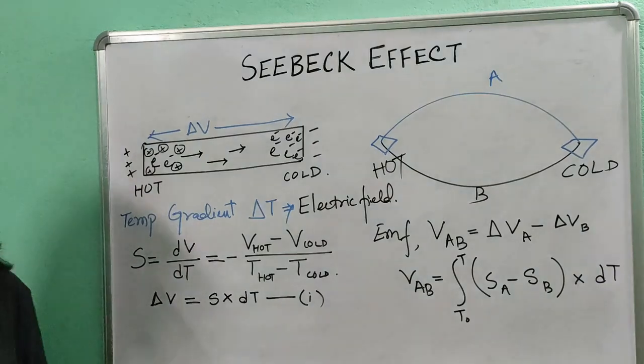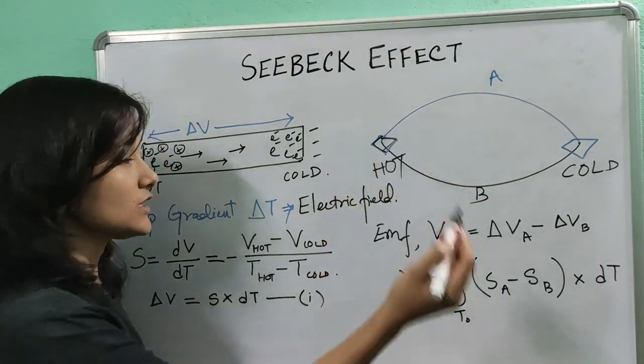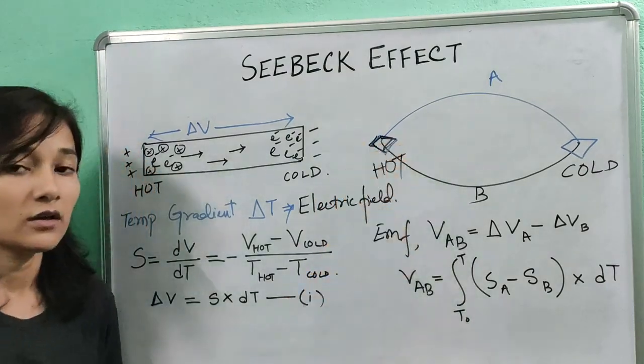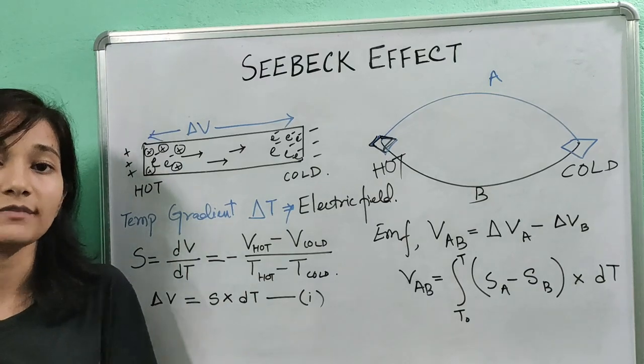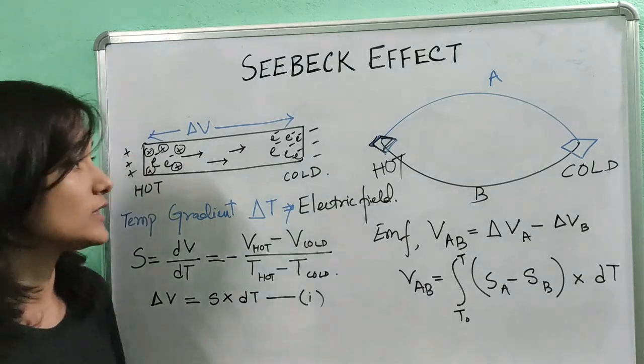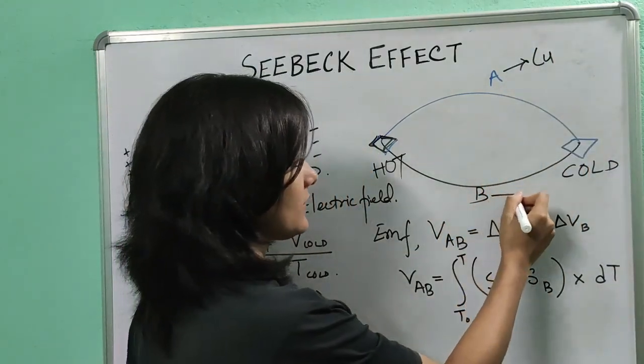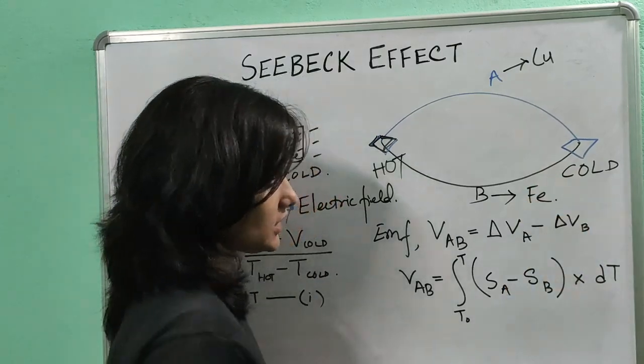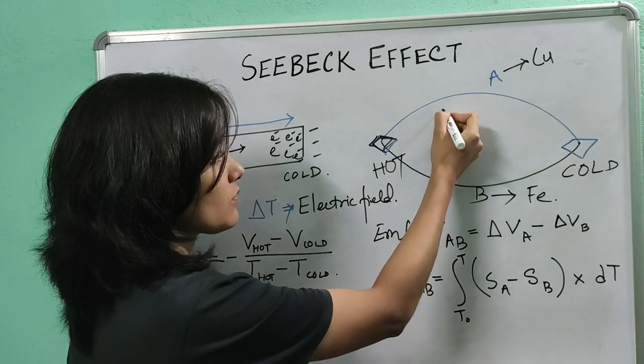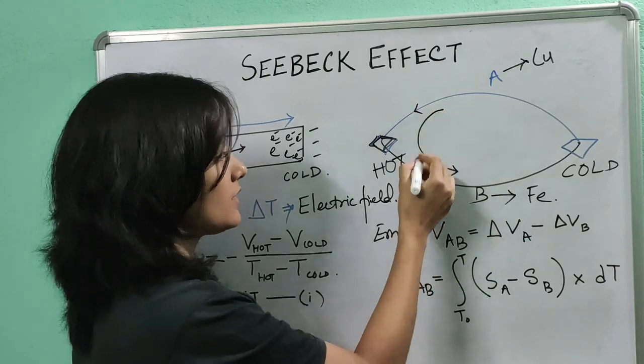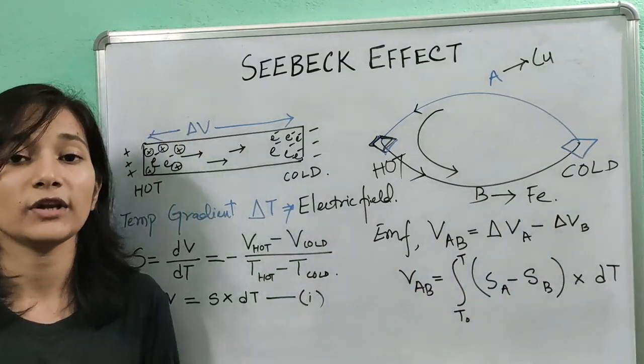The direction of the current at the hot junction is always from the metal which occurs earlier in the series towards the metal which comes later in the series. For example, if this wire A is made up of copper and this B metal is iron, then at the hot junction the direction of the current will be from copper to iron because the metal copper comes before iron in the thermoelectric series.